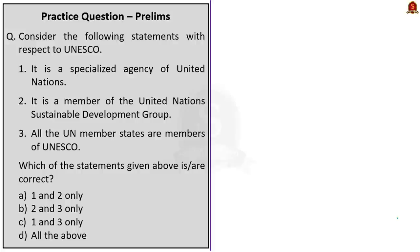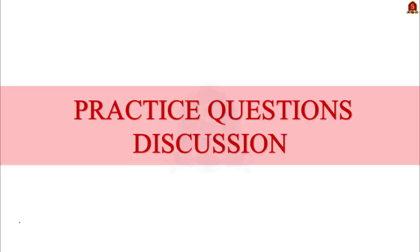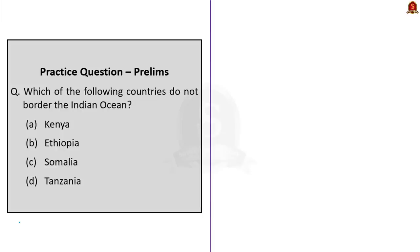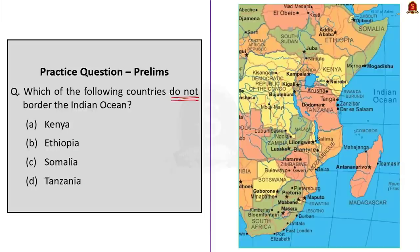With this, we have come to the end of the news article discussion session. Let us move on to the practice questions discussion session. First, a map-based question asks: which of the following countries does not border the Indian Ocean? Options are Kenya, Ethiopia, Somalia, and Tanzania. If you know that Ethiopia is a landlocked country, you can easily arrive at the correct answer — option B, Ethiopia. Somalia faces the Indian Ocean and Gulf of Aden, Kenya and Tanzania also face the Indian Ocean.